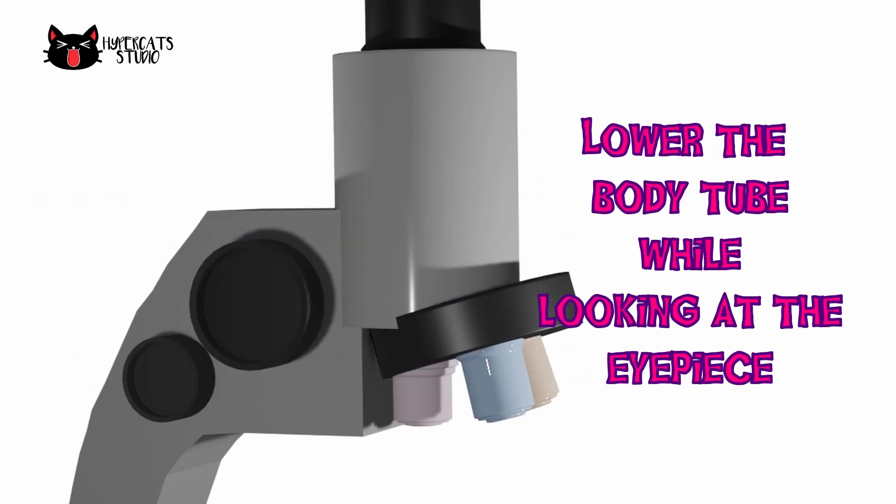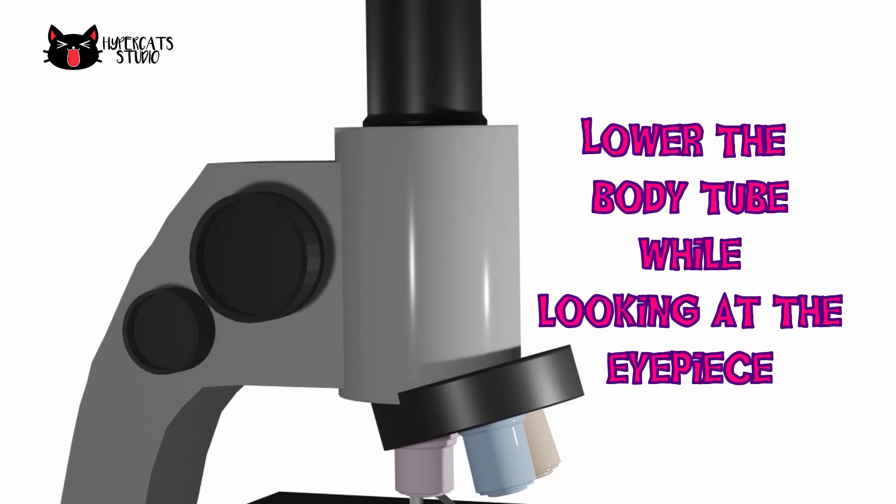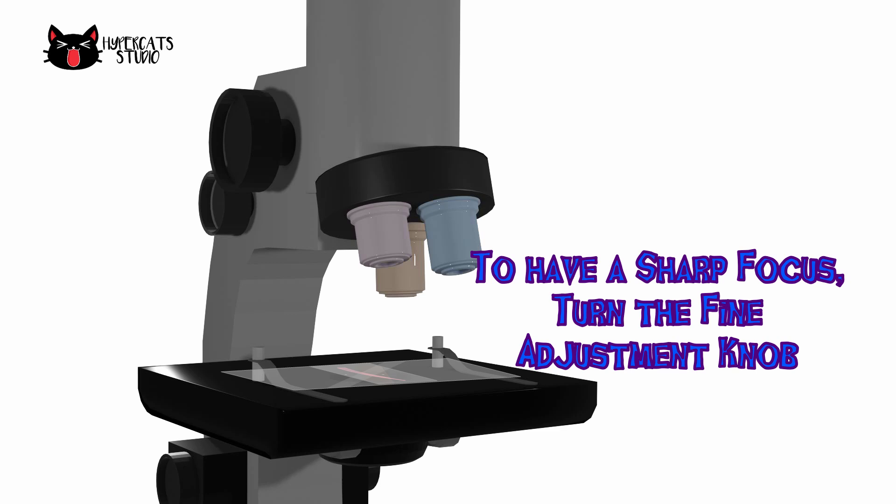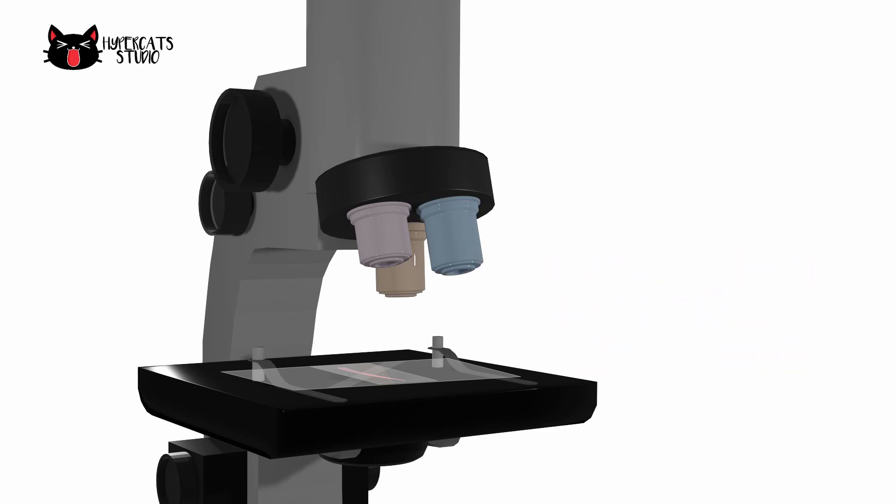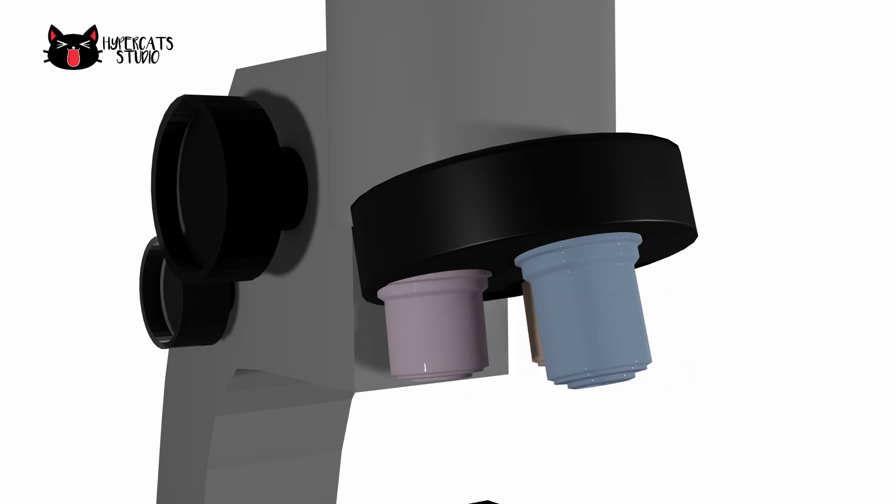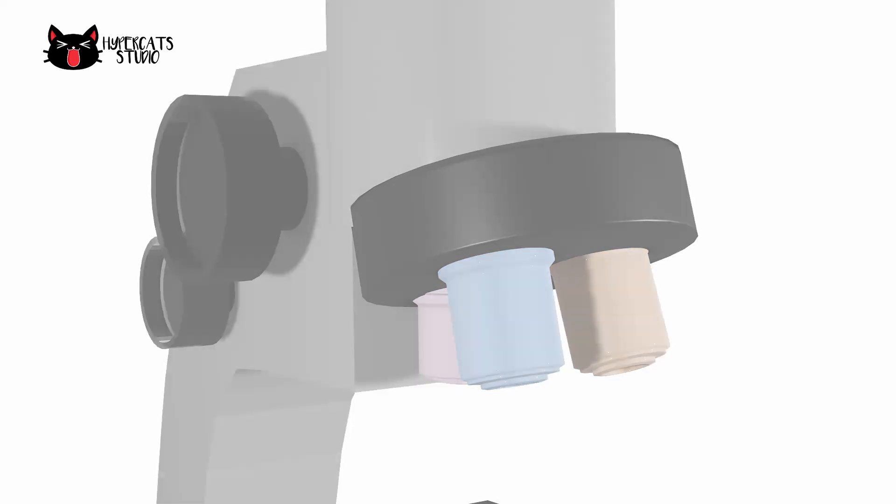Lower the body tube slowly while looking at the eyepiece. Make sure it will not touch the prepared slide to avoid breaking the cover slip. To have a sharp focus, turn the fine adjustment knob until you can see it clearly. If you want to have a bigger image, change the objective lens by rotating the nosepiece. If the image becomes blurry, you can adjust the focus using the fine adjustment knob.